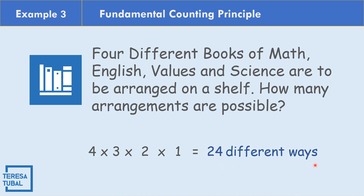For example, one arrangement could be Math, English, Values, Science. Another could be English, Values, Science, Math. A third could be Values, Science, Math, English. If we write all possible ways, we can form 24 different arrangements.